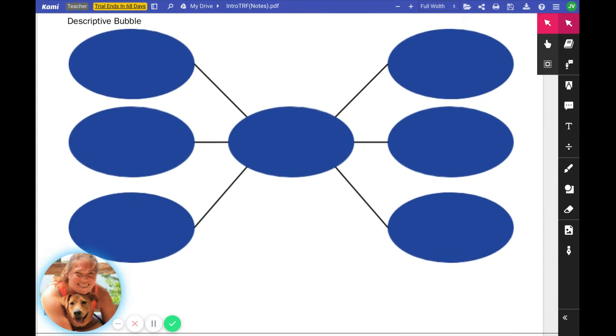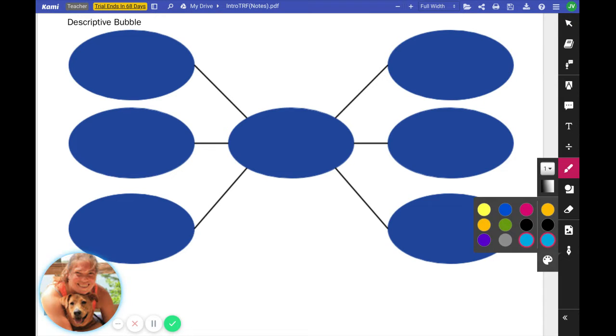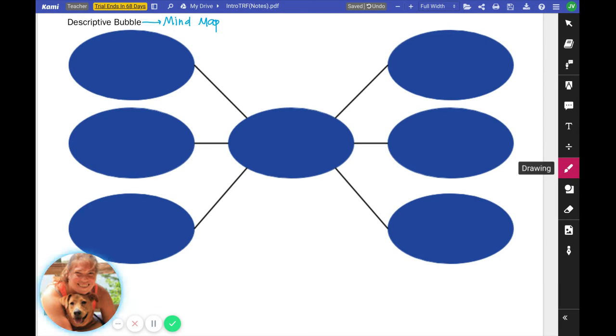And the first is this descriptive bubble. Except for a lot of times, I don't know about you, but I've heard it called a mind map. Here's a way this could look. I'm thinking that I have a question on analyze the structure of an atom. That's my initial question. So I know that I'm going to take a deep dive into atoms.